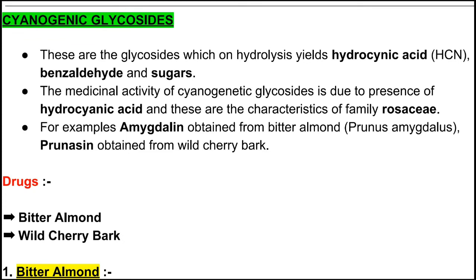Cyanogenic glycosides are those glycosides which on hydrolysis yield hydrocyanic acid (HCN), benzaldehyde, and sugar. The medicinal activity of cyanogenic glycosides is due to the presence of hydrocyanic acid, and these are characteristics of the family Rosaceae.